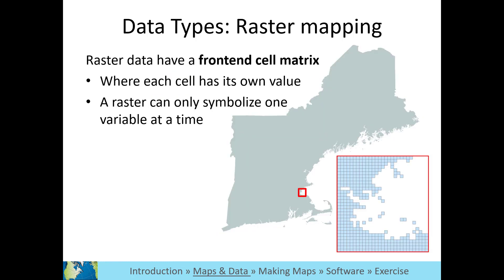Raster data are displayed differently than vector data in GIS software. Instead of being represented by different shapes, raster data is a continuous cell matrix. Each cell or pixel is the same size and has its own value.